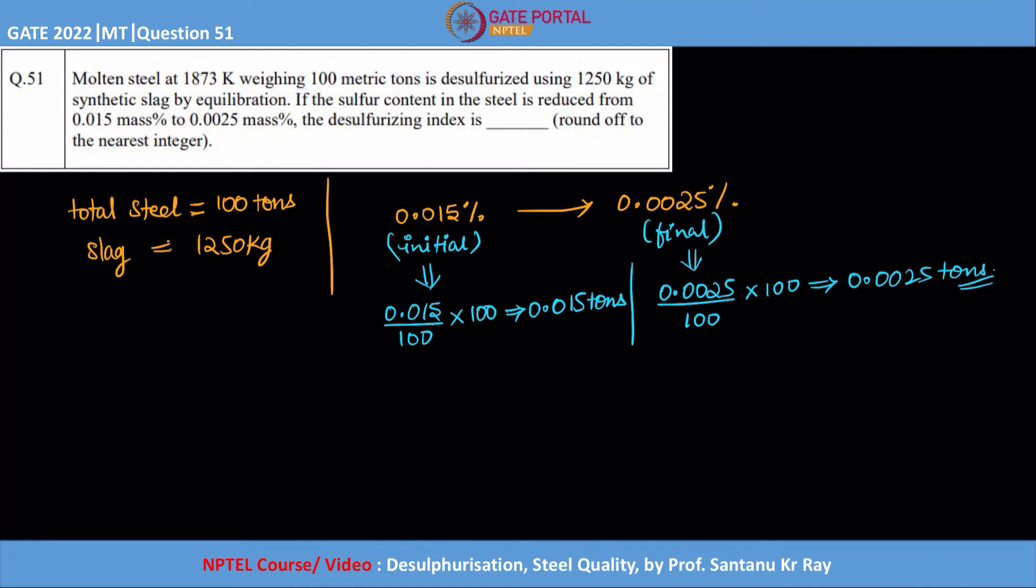If initially we have this much and finally we have only this much, so this particular difference is actually going into the slag. Difference will be in the slag. Now this is what we are interested to know, how much of sulfur is actually going into slag.